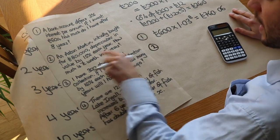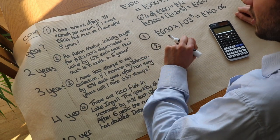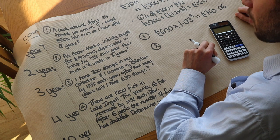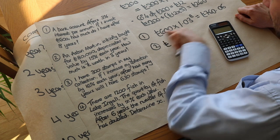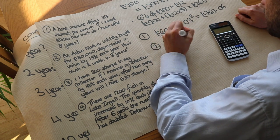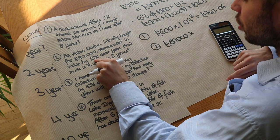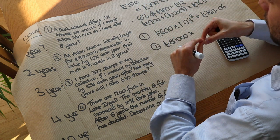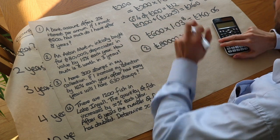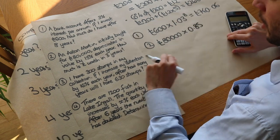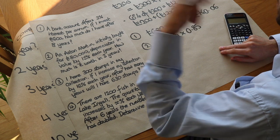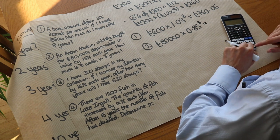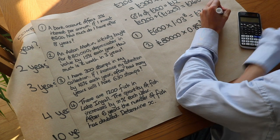Question two: an Aston Martin initially bought for eighty thousand pounds depreciates — reduces in value — by 15% each year. How much is it worth in three years? We start at 100%, reduce by 15%, leaving 85% of its value. The decimal multiplier is 0.85. We want the value after three years, so we multiply by 0.85 cubed. Eighty thousand times 0.85 cubed gives forty-nine thousand, one hundred and thirty pounds.